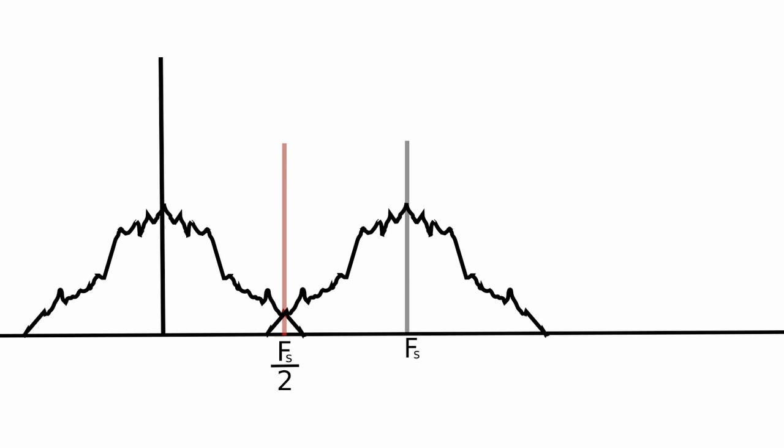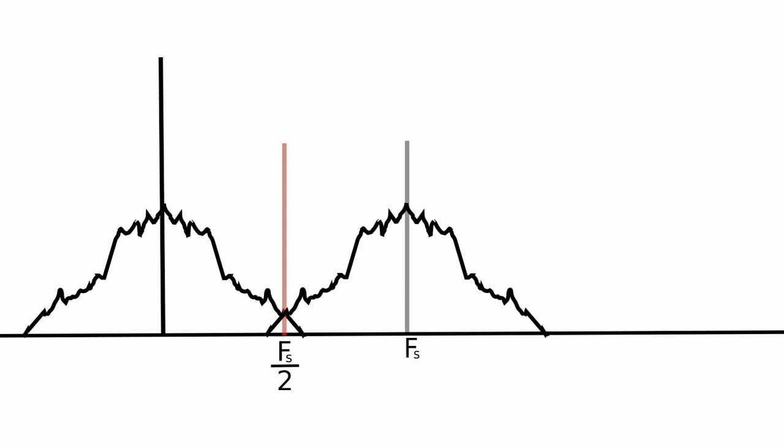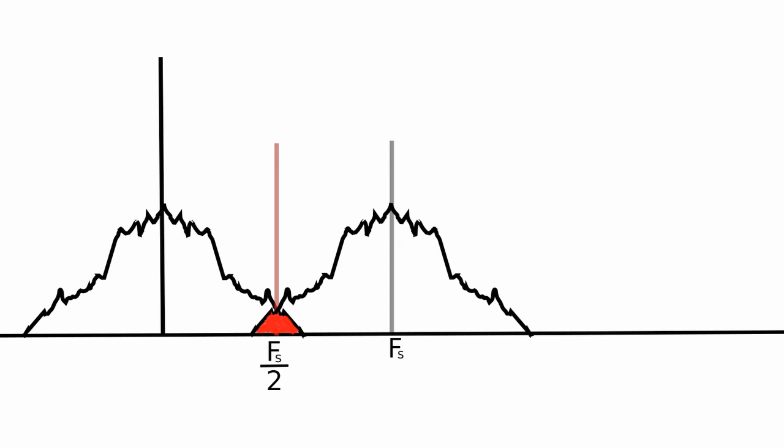As we can see, overlap, i.e. aliasing, will occur when the highest frequency component in the signal is greater than half the sampling rate.